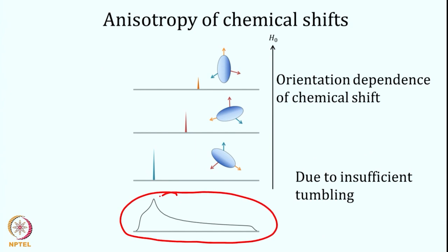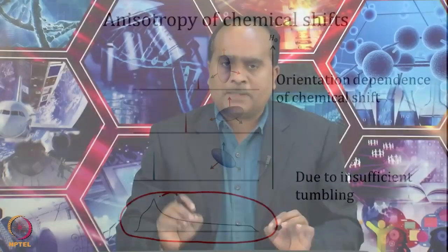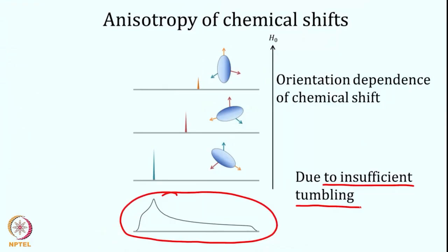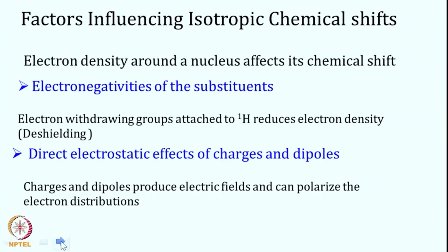This broad line arises from insufficient tumbling of the molecule. Even in oriented liquid crystalline samples where there is incomplete tumbling, some anisotropy is observed. Anisotropy means orientation-dependent chemical shift, and this is used in many NMR experiments. By contrast, isotropic chemical shift arises from complete tumbling, giving a sharp line with no orientation dependence.